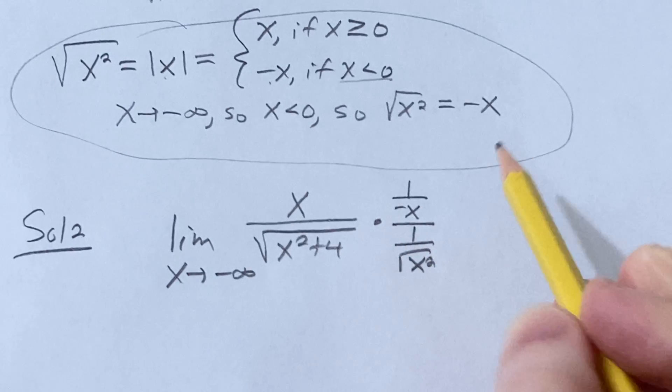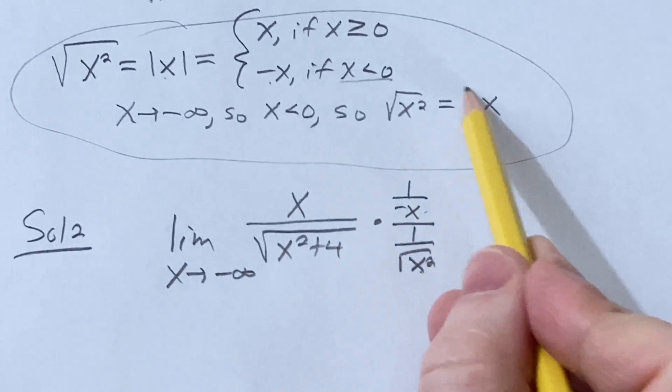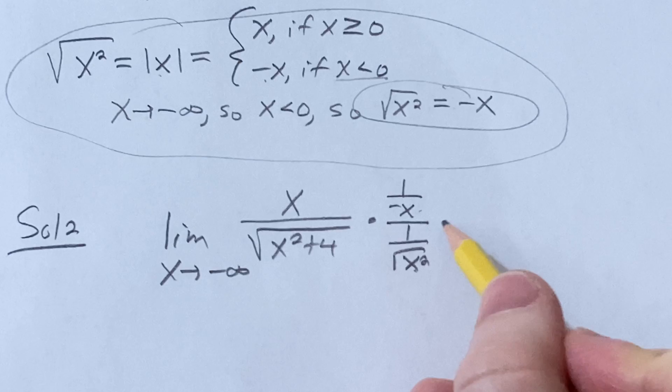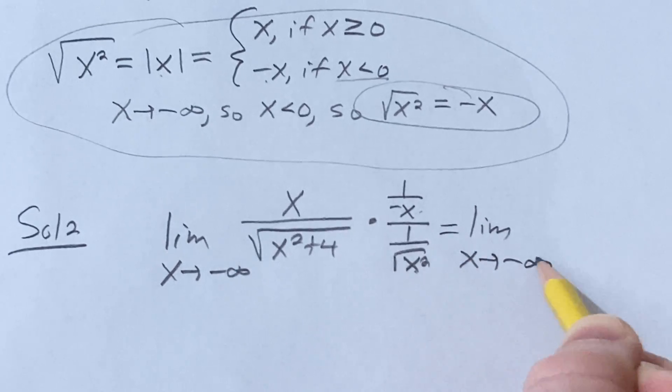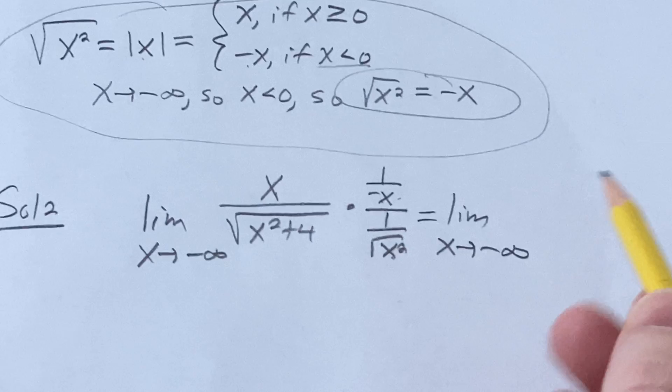Realize that these are the same because the square root of x squared is equal to negative x by what's written here. So this becomes the limit as x approaches negative infinity, x over negative x is negative 1.